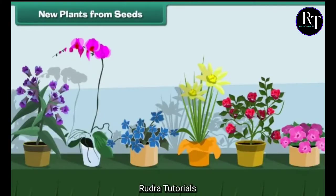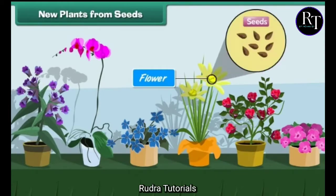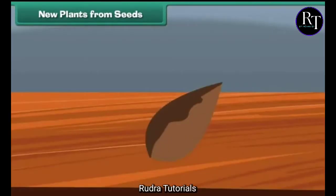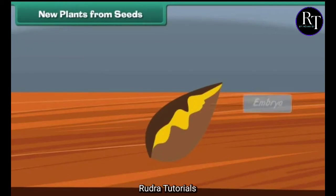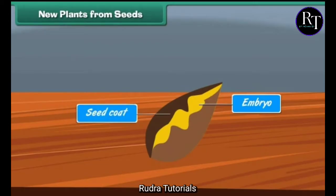New plants from seeds. Flowering plants produce seeds. Each seed produced by a plant has a baby plant inside it, called the embryo. The seed is surrounded by a tough covering called the seed coat, which protects the baby plant and prevents the drying up of the seed.